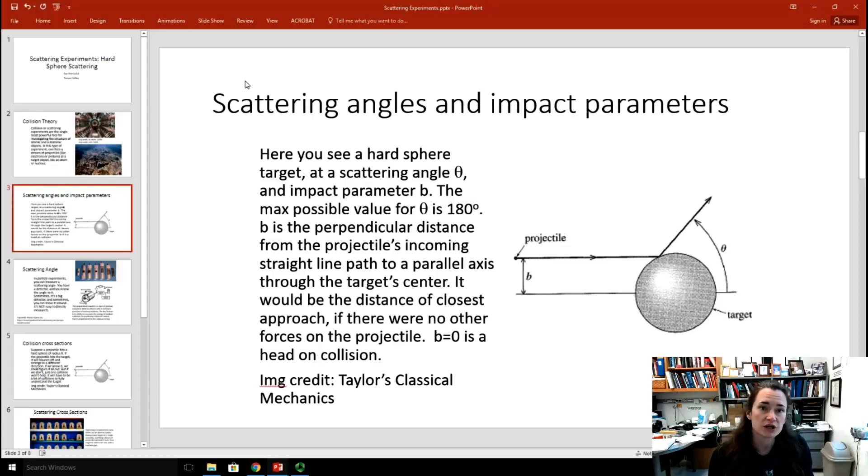We're going to define what's known as the impact parameter. I'm going to use the variable B to describe the impact parameter. B is the perpendicular distance from the projectile's incoming straight line path to a parallel axis through that target center. It would be the distance of closest approach if there were no other forces on the projectile. If B is equal to zero, then that would be a head-on collision.